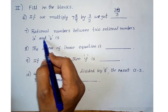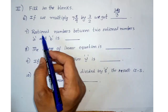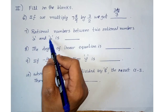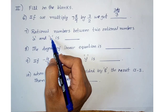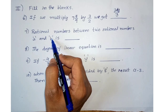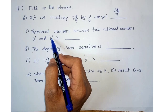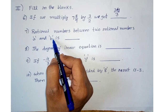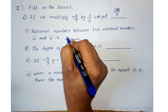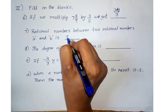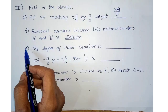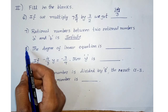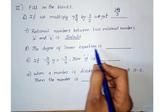Seventh one: how many rational numbers exist between two rational numbers? Between any two rational numbers, there are infinitely many rational numbers. The answer is infinite rational numbers.